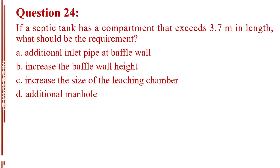Question number 24. If a septic tank has a compartment that exceeds 3.7 meters in length, what should be the requirement? Letter A, additional inlet pipe at baffle wall. Letter B, increase the baffle wall height. Letter C, increase the size of the leaching chamber. Letter D, additional manhole. The answer is Letter D, additional manhole.